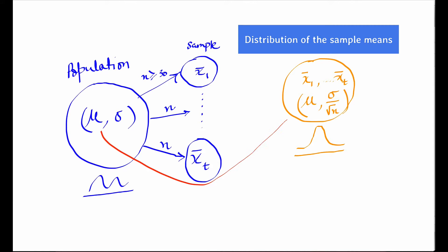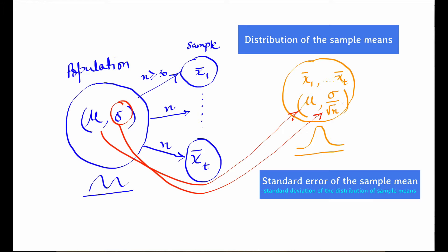Now remember for this to be true, the sample size n has to be sufficiently large, that is greater than or equal to 30. The central limit theorem does not require the distribution of the population to be a normal distribution.